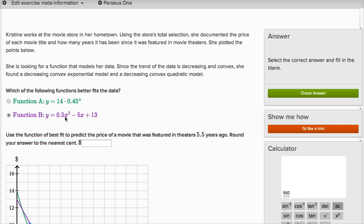So this is price as a function of how long the movie has been released, where X is how long it's been released, and Y is its price. So if X is 5.5, let's figure out what Y is going to be.